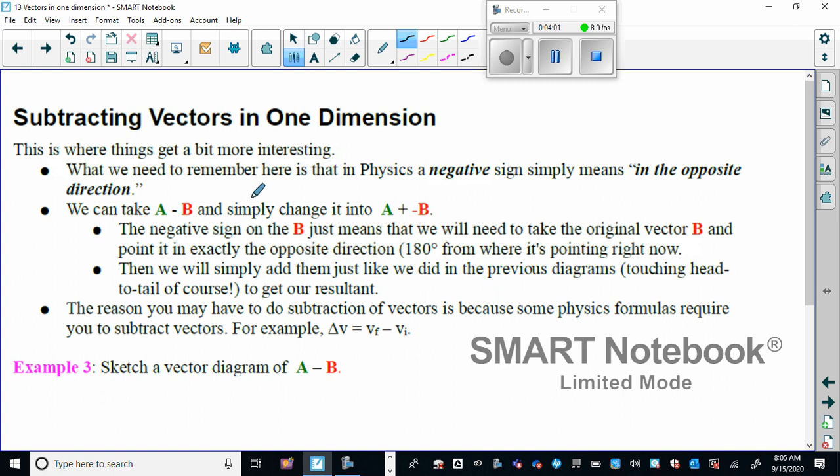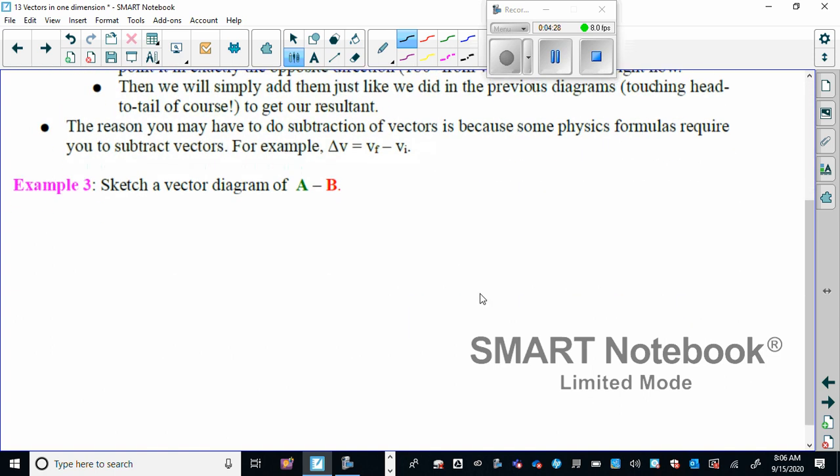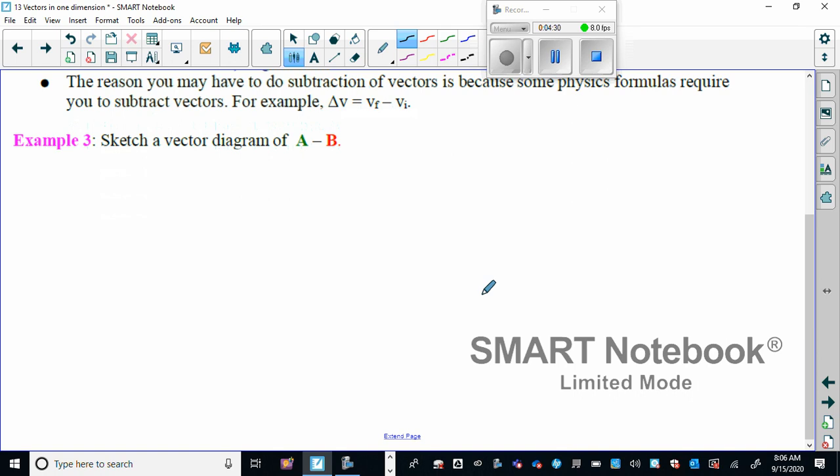And then we'll spend a little time on subtracting vectors in one dimension. Subtracting vectors is something we do very infrequently, but we really want to think of it as not subtracting, just adding something with a negative sign. So in mathematics, right here it says we can take A minus B and simply change it to A plus negative B. And any time we make it negative we simply change the direction to the exact opposite. So in this example here, sketch the diagram of A minus B.